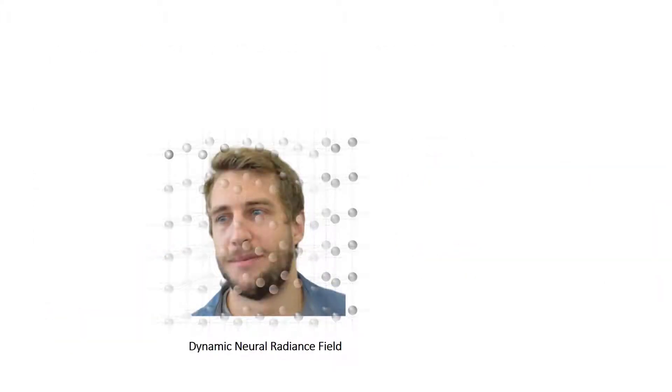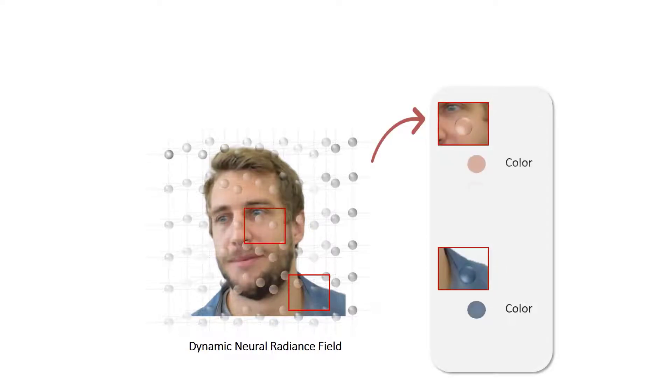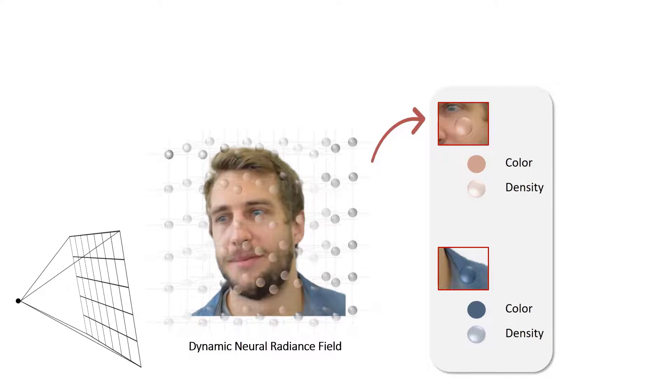Our scene representation network stores the radiance field of the scene, including per-point colors and density values. An image of the scene is generated using volumetric rendering by casting rays through each pixel. Along the ray, the radiance field is sampled and the color and density values are accumulated to compute the final color of each pixel.